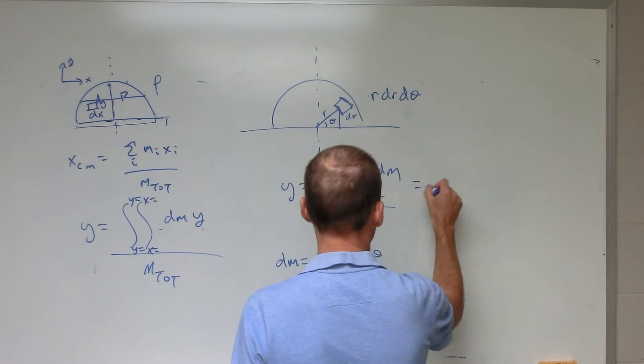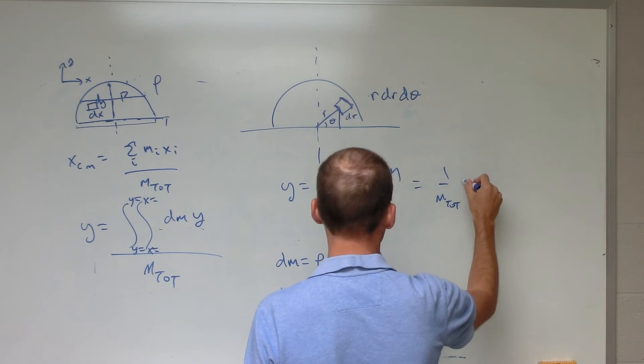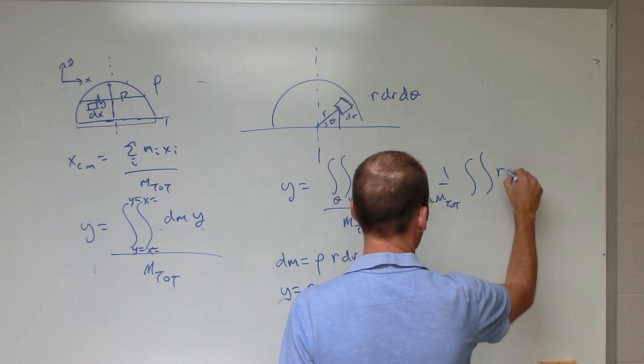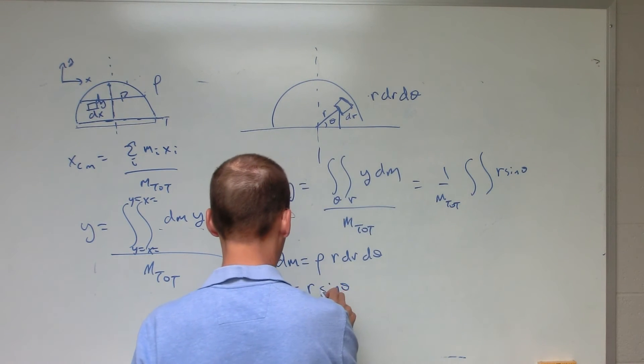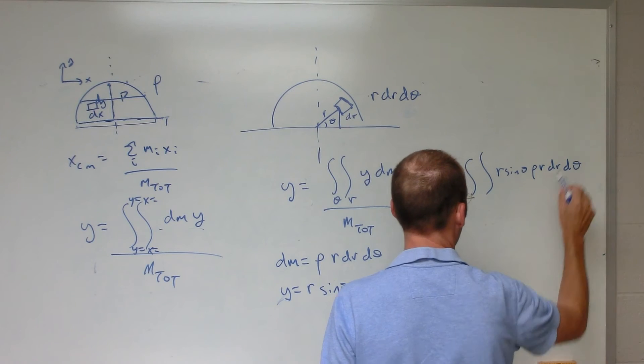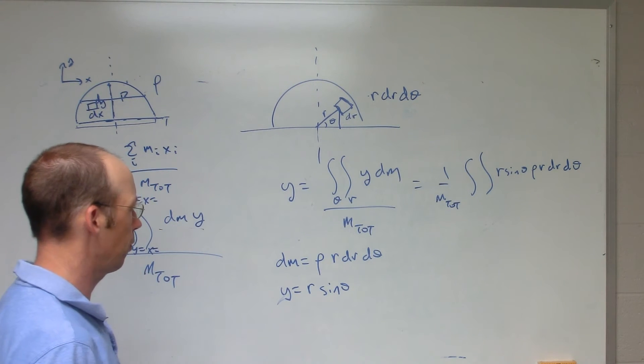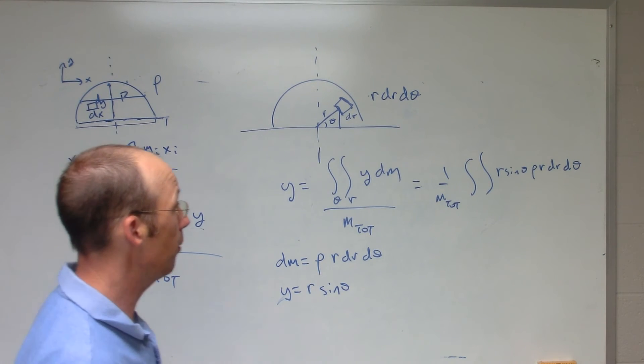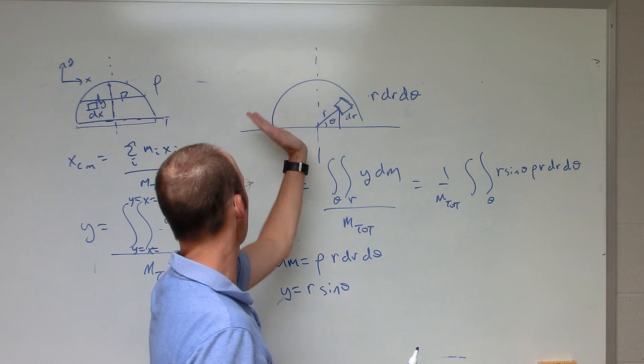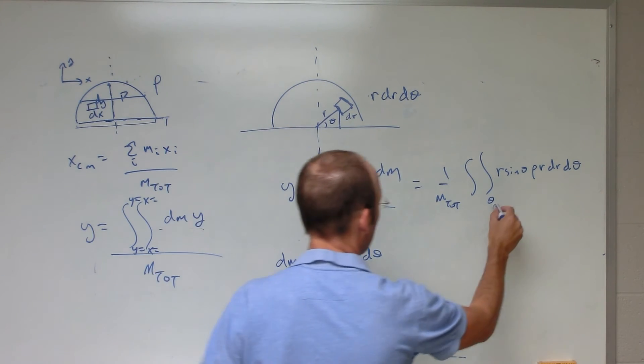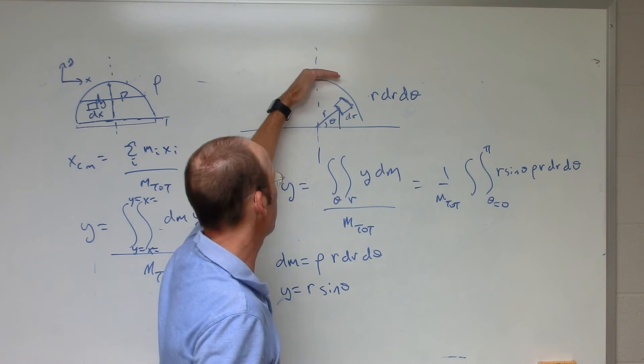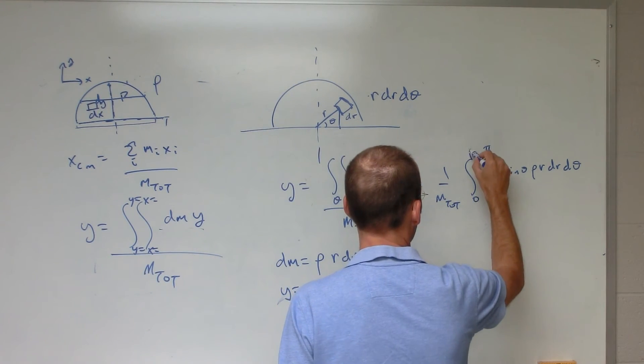So now I can put this all together, and I get 1 over m total, the integral of y, which is going to be r sin θ, and then I get dm, ρ r dr dθ. Now for the limits of integration, I can do θ. θ is going to go from here, I need to sweep all the way over to there. So that's θ equals 0, θ equals π. So I'm going to go from θ equals 0 to π. And from r, I'm going to go from here up to the top, which is big R. I'm going to go from 0 to r.